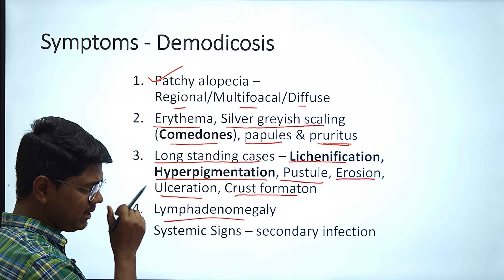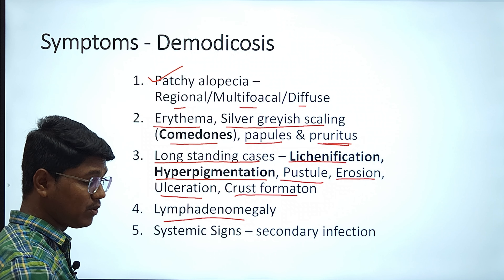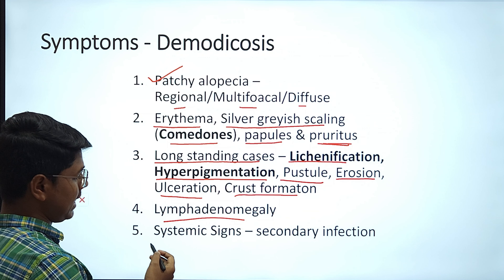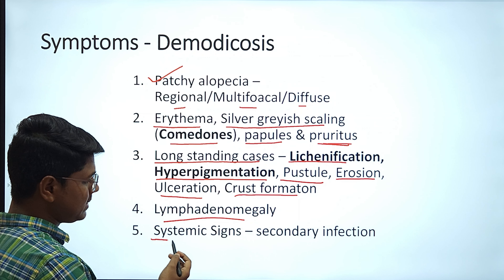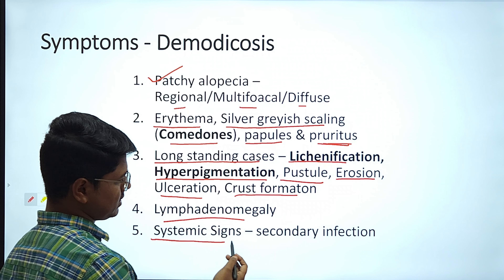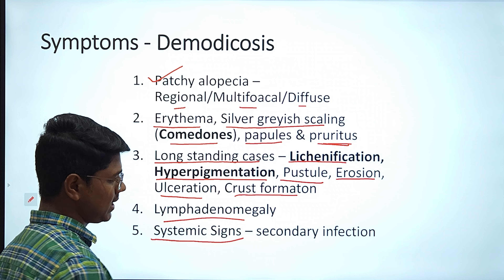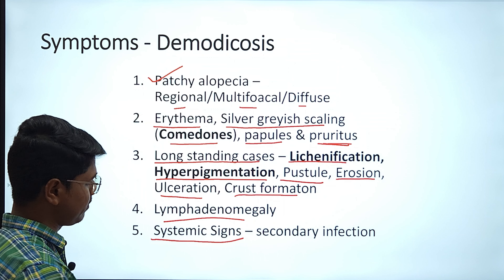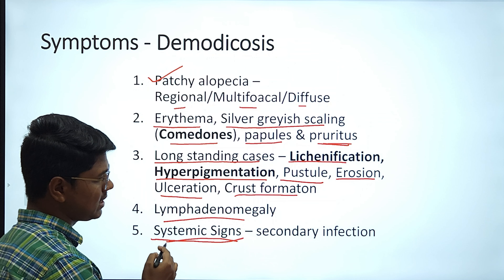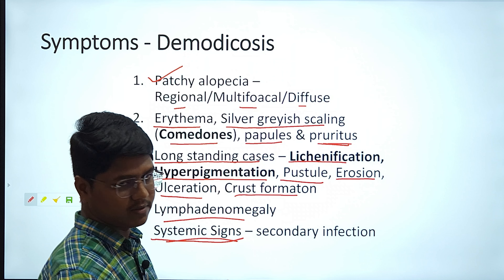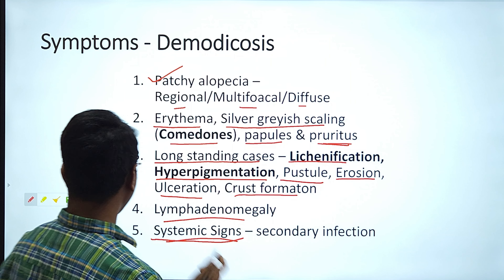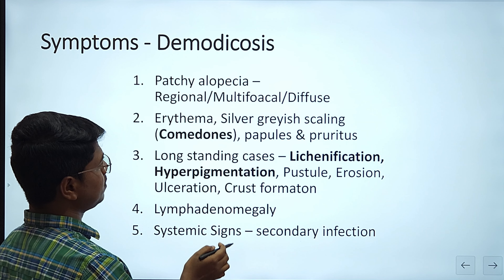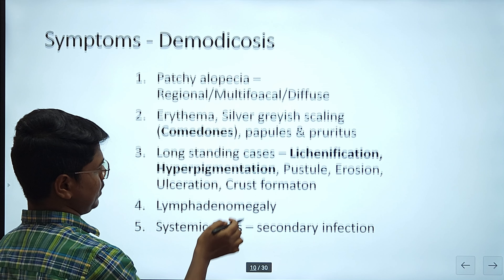You may find lymphadenomegaly — the superficial lymph nodes may be enlarged. If there is secondary infection by bacteria like Streptococcus or Staphylococcus, you may find systemic signs like fever. These are the symptoms of demodicosis.